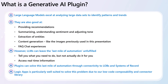Logic Apps as plugins. Let's start with what is a generative AI plugin. We've talked about large language models in part two — suggest you check that out. Large language models excel at analyzing large data sets to identify patterns, trends, and make predictions. They're good at providing recommendations, summarizing, understanding sentiment, adjusting tone, extracting entities, generating content like images, and powering FAQ chat experiences.